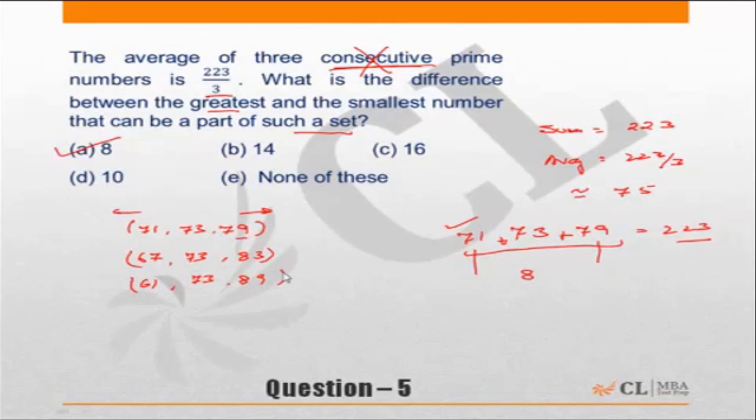Similarly, it could be 61, 73, and 89. There could be multiple cases if the question did not specify consecutive. If consecutive was not there, I will start looking for the smallest prime number.